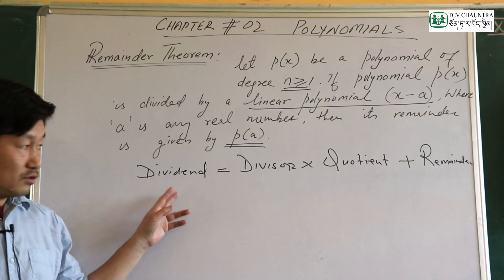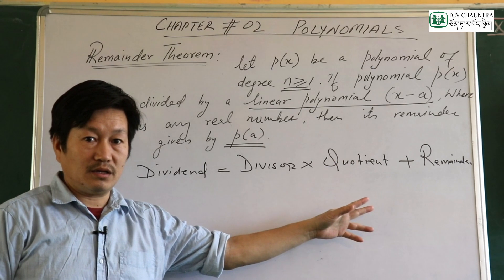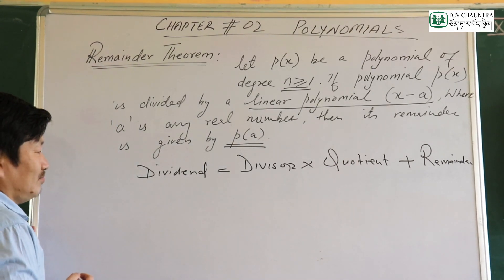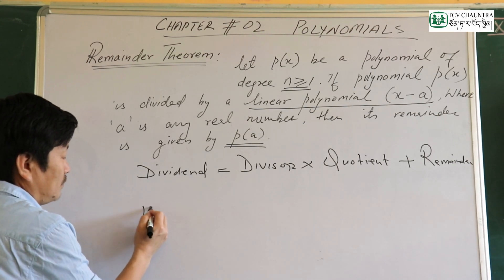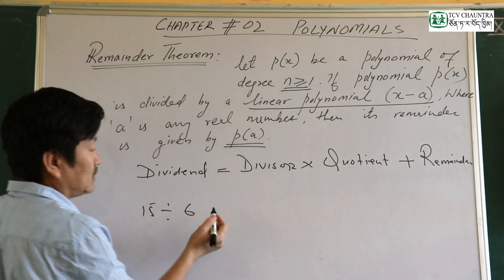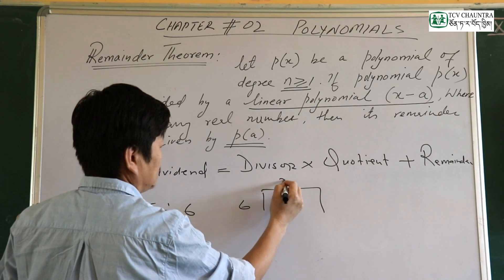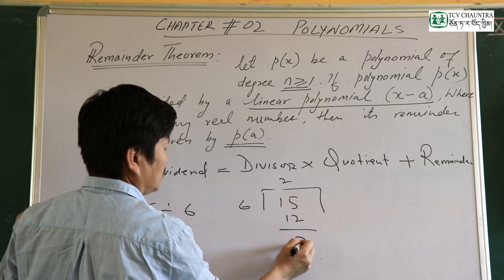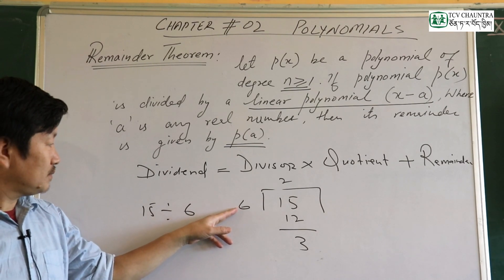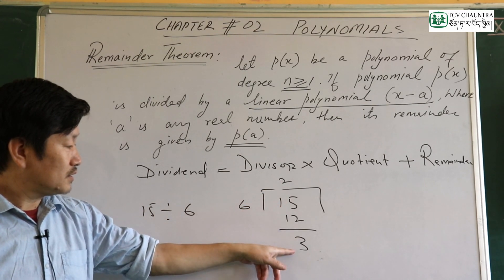The division algorithm states: dividend equals divisor into quotient plus remainder.